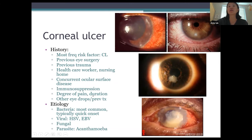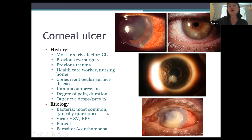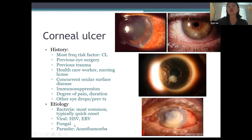Corneal ulcers: the most frequent risk factor is contact lens use, but other risk factors include previous eye surgery, trauma, healthcare or nursing home exposure to bacteria, severe dry eye, and systemic immunosuppression. By history, get the patient's degree of pain, duration of symptoms, and any prior eye drops used. Bacterial etiology is most common with quick onset, but viral, fungal, and parasitic etiologies are also possible.